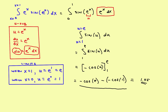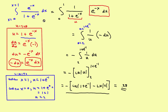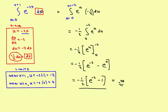To recap: on the second problem it involved e to the x but turned into a 1 over u integral involving the natural log. On the first problem it started as e to the x and stayed an e to the x problem through u substitution. On the third problem it involved e to the x but turned into a trig integral. Your choice of u makes a big difference. Those are three examples of definite integrals involving e to the u.